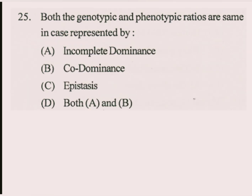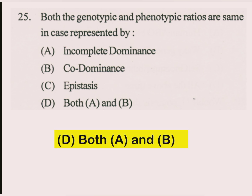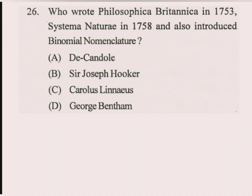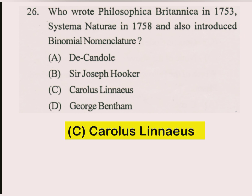Question number 25. Both genotypic and phenotypic ratios are same in cases represented by: the answer is D part, both A and B, i.e., incomplete dominance and codominance, where genotypic and phenotypic ratios are the same. Question number 26. Who wrote Philosophia Botanica in 1753, Systema Naturae in 1758, and also introduced binomial nomenclature? The answer is C part: Carolus Linnaeus.